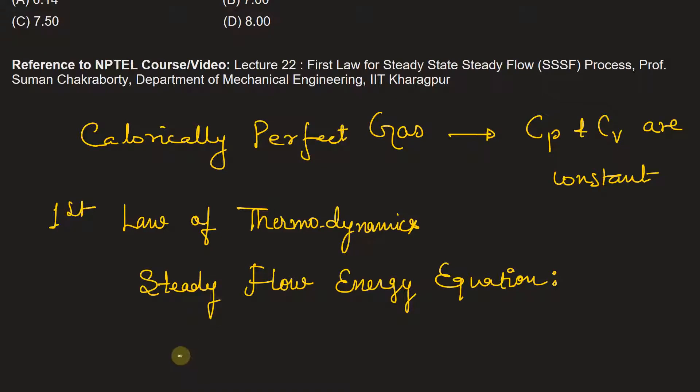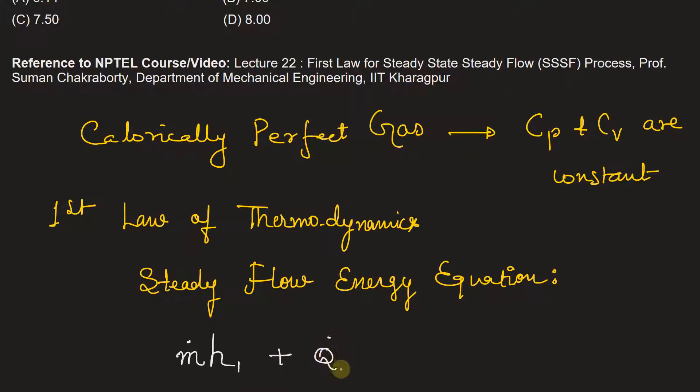enthalpy at the entry of turbine, that is mass flow rate into specific enthalpy at the inlet of turbine, that is h1, plus the rate of heat change in the turbine is equal to enthalpy at the exit of turbine, that is mass flow rate into h2. h2 is the specific enthalpy at the exit of the turbine plus the rate of work done by the turbine.